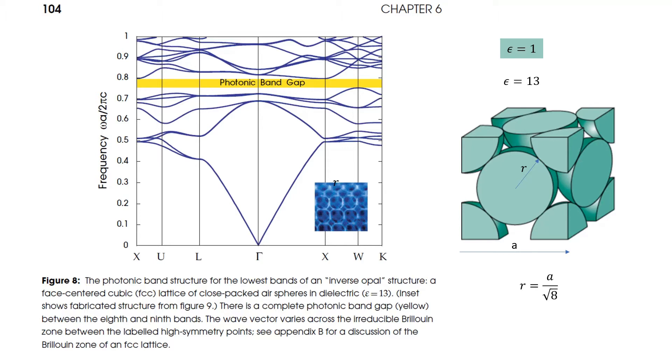The radius of each sphere is a divided by square root of 8, where a, as you see here, is the unit cell lattice length.